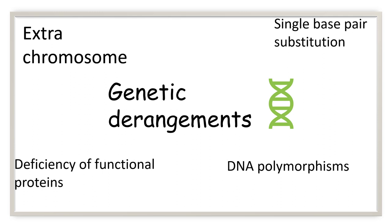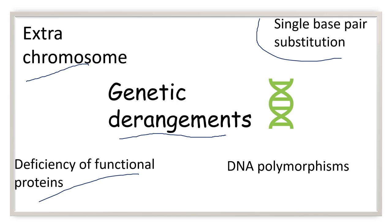Genetic derangements are also a cause of cell injury. For example, an extra chromosome can lead to Down syndrome, and a single base pair substitution can lead to sickle cell anemia. Genetic defects can cause a deficiency of functional proteins, and some individuals are more prone to certain injurious agents due to DNA polymorphisms. You will learn more about these genetic terms in the immunology chapter.